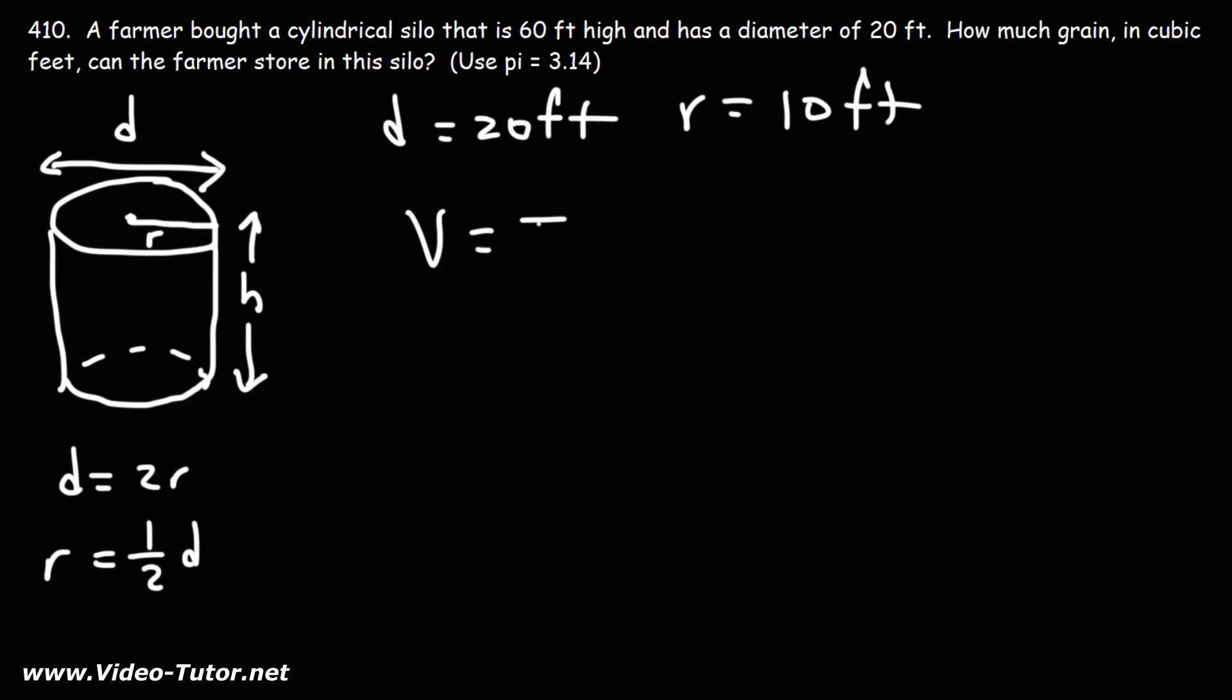So now we can use this equation. The volume of the cylinder is pi r squared times the height. Pi is 3.14. The radius is 10 feet. And the height of the cylinder, that's the height of the silo. That's 60 feet.